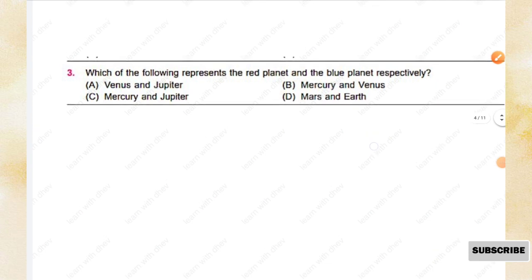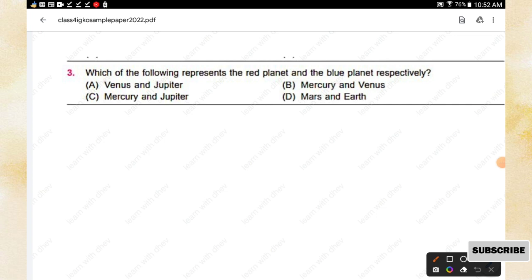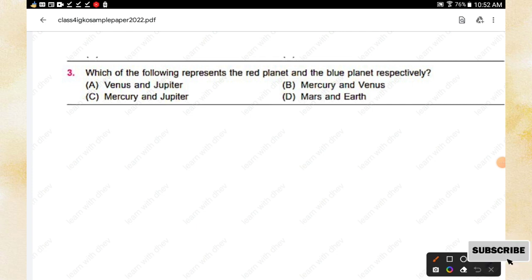Question number three: Which of the following represents the red planet and the blue planet respectively? Options are: A — Venus and Jupiter, B — Mercury and Venus, C — Mercury and Jupiter, D — Mars and Earth. The red planet is Mars and the blue planet is Earth, so option D is the right answer.